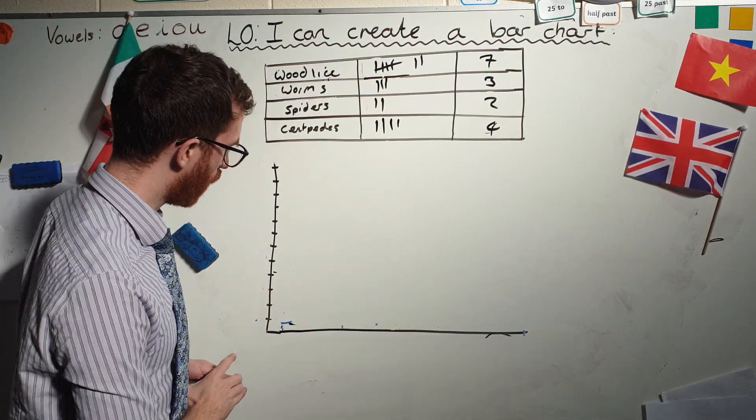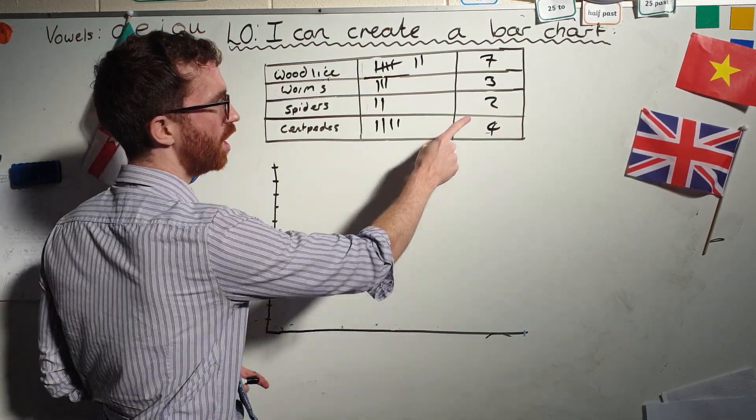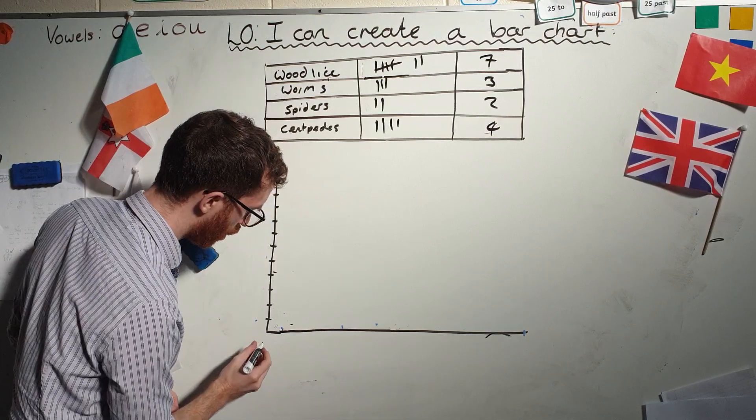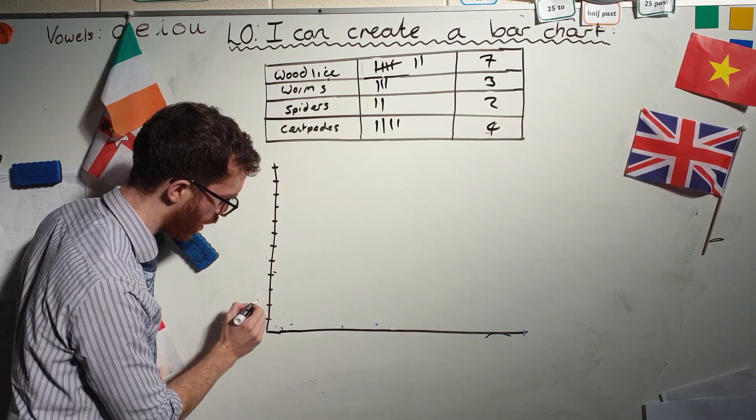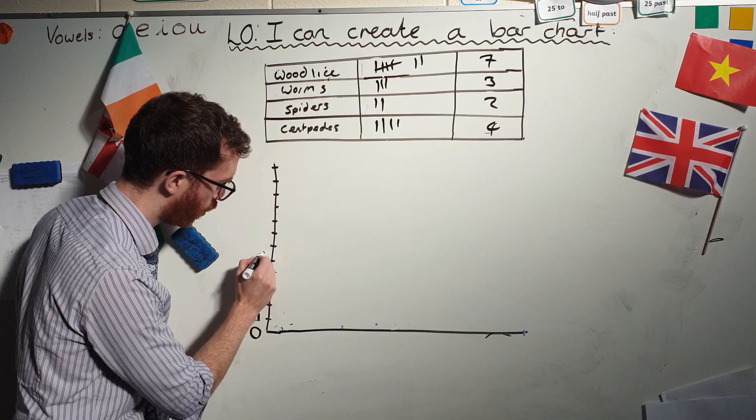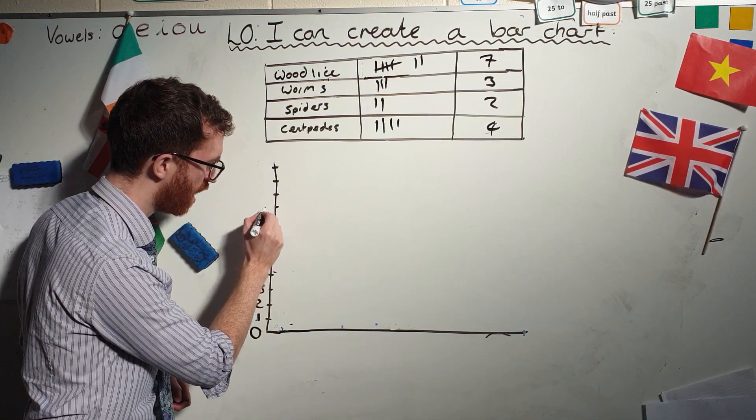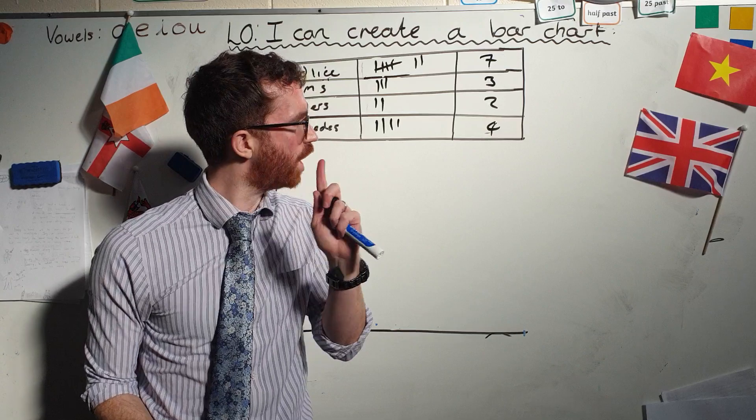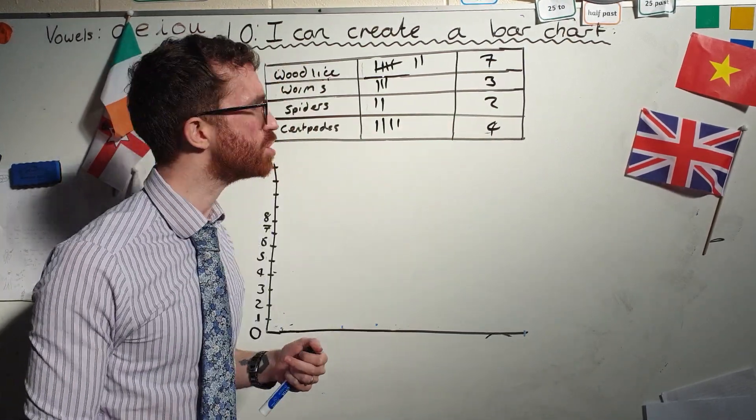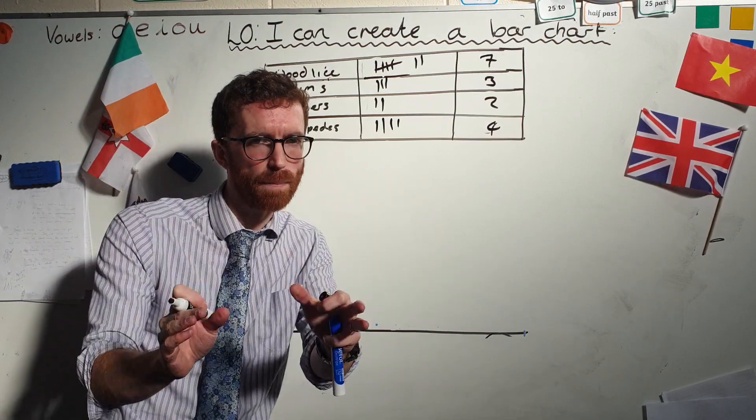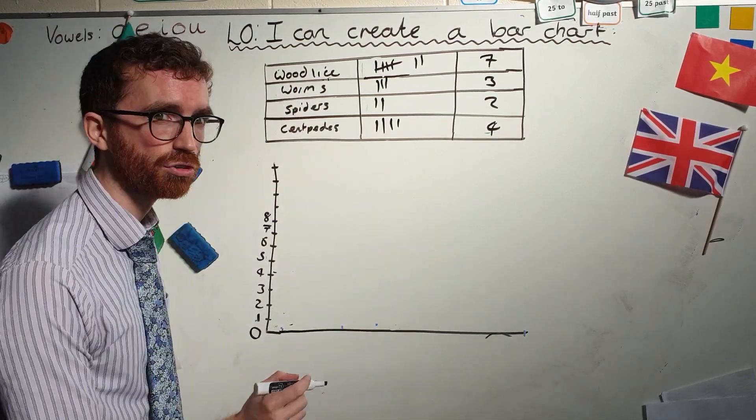So here's my bar chart down here. Well, I'm going to have to make a scale for my bar chart. Seeing as it only goes up to seven, I'm actually going to go up in ones. This bottom line is zero. It must always be zero. Then I've got one, two, three, four, five, six, seven, eight. Always go at least one over your top score. Now I'm going to put the information into my bar chart.